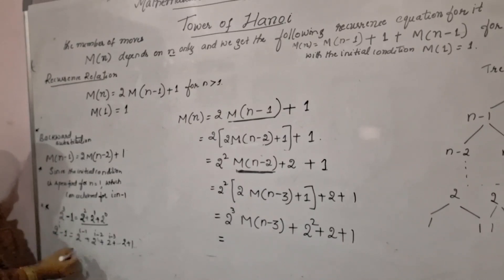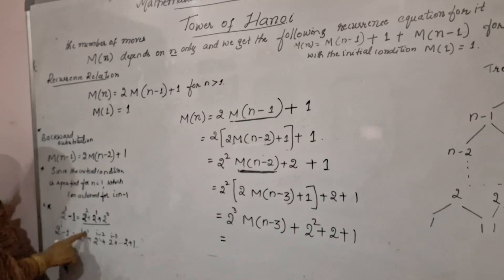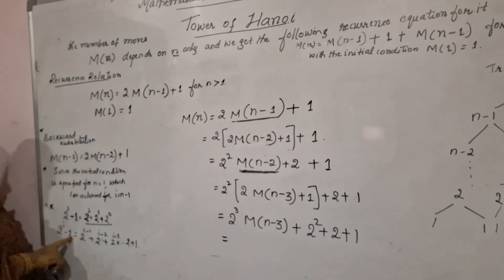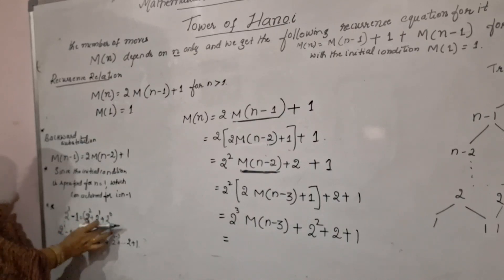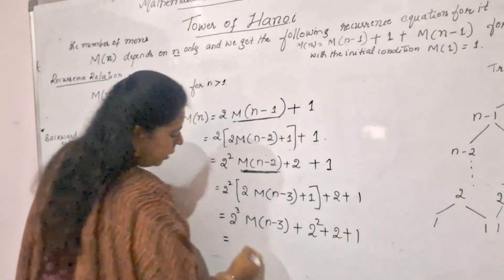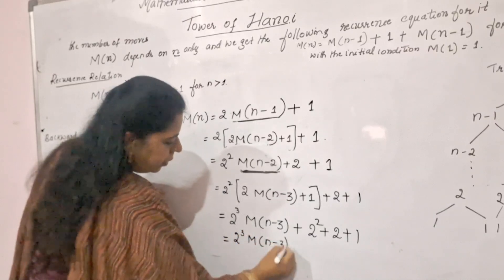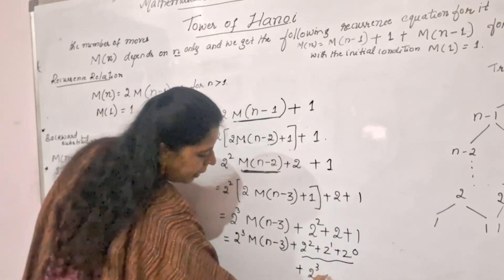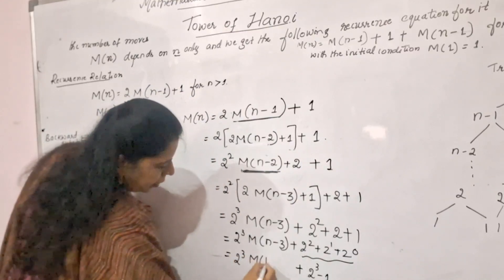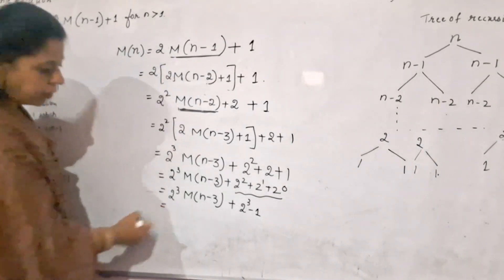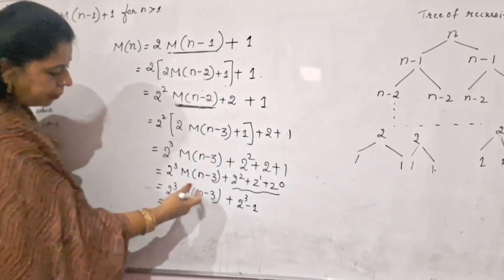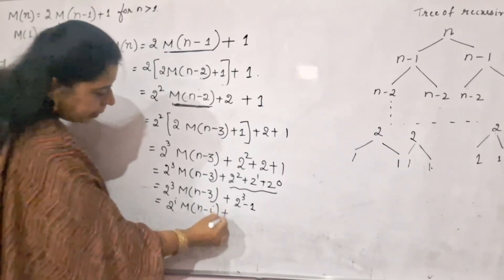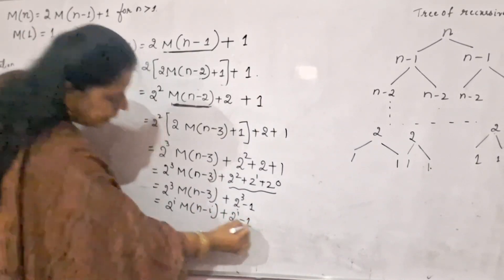Using that substitution, I can write 2 cubed times M(N-3) plus 2 cubed minus 1. Further, continuing this pattern you get 2 to the power 4 times M(N-4) plus 2 to the power 4 minus 1, and so on. In general, this can be written as: M(N) = 2^i · M(N-i) + 2^i - 1.